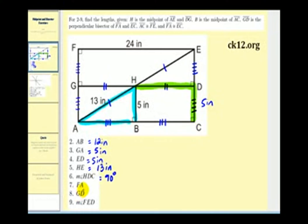Next we want the length of segment FA, and FA is the shorter side of the large rectangle. And since GA is congruent to segment HB, GA is 5 inches, and GA is congruent to segment FG, so it's also 5 inches. And therefore, segment FA would be 10 inches.